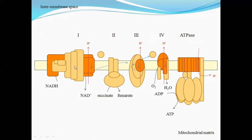As hydrogen ions are exchanged and electrons are transported, energy is released. The hydrogen ions in the matrix are pumped out into the intermembrane space and accumulate there. Over time, an electrochemical gradient develops across the membrane. These protons will then be transported back into the mitochondrial matrix, but the inner mitochondrial membrane is impermeable to them, so they can only enter through the ATP synthase.